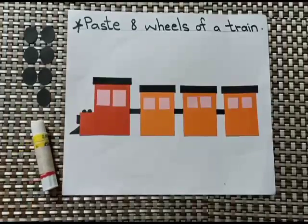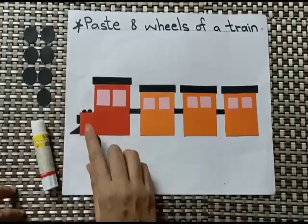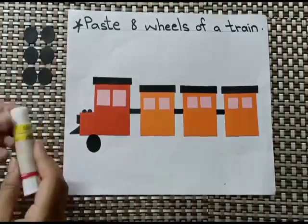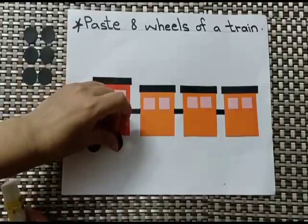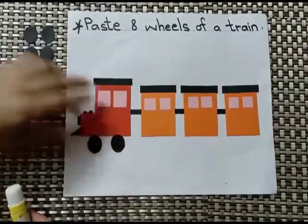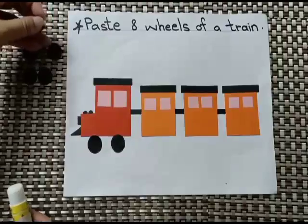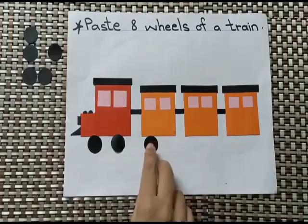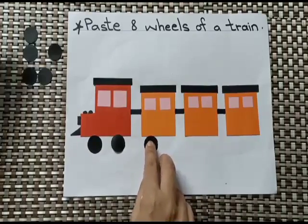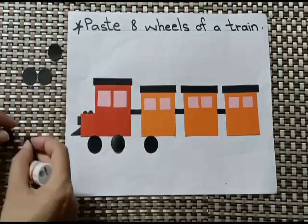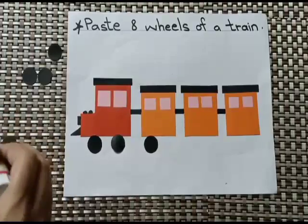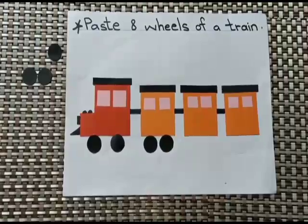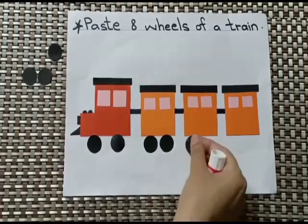Here is one wheel. Then I'm pasting another wheel — count: one, two wheels. Then I'm taking another — this is a circle shape, round and round. I'm pasting another circle.